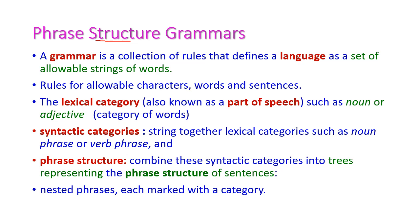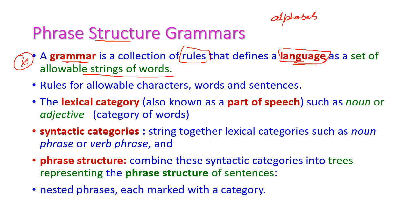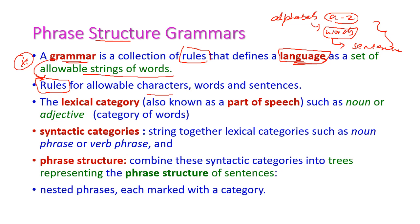Phrase structure grammar. First, let us see what is grammar. Grammar is a collection of rules that defines the language as a set of allowable strings of words. If we take any language, there is a set of alphabets. For example, if it is English, then we have A to Z. These are alphabets, and the combination of these alphabets will form words, and the combination of words will form sentences. So for constructing the words and sentences, rules are there. Those rules are called as the grammar. Rules define allowable characters, words, and sentences, and for every language there should be a limited set of characters, words, and sentences.